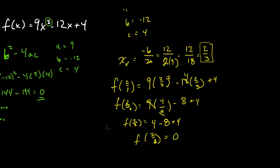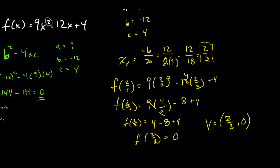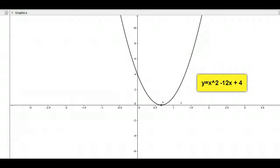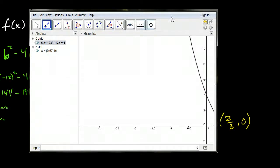So the vertex of this equation is at 2 thirds, 0, which means that's the only place that it will cross the x-axis. Let's take a look at if that's true. Let's look at the vertex of y equals x squared minus 12x plus 4. 0.670, or 2 thirds, comma, 0.